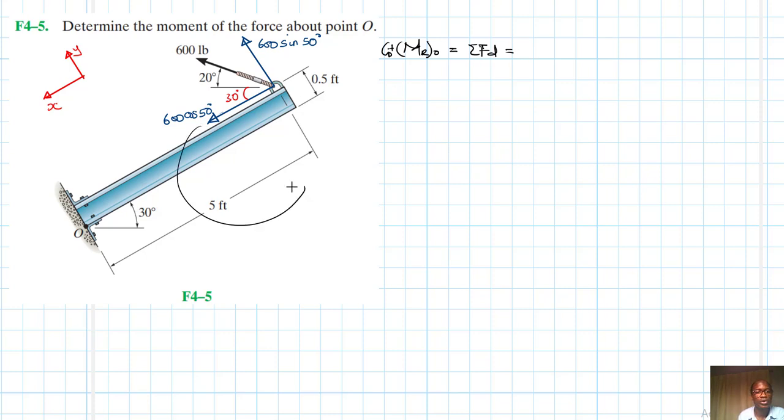Let's start with the horizontal component about point O. This one is in this direction, which is anticlockwise. It gives us 600 cos 50 times the lever arm, which is 0.5. And then the other one there, which is also anticlockwise, which is positive, we'll just say plus 600 sin 50 times 5.